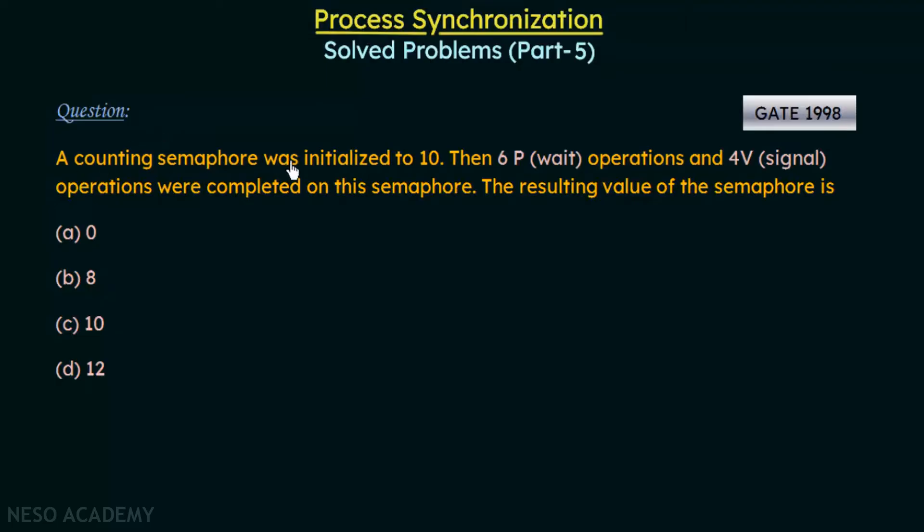It says a counting semaphore was initialized to 10. Then 6P, that is wait operations, and 4V, that is signal operations, were completed on this semaphore. The resulting value of the semaphore is what? We have four options: A) 0, B) 8, C) 10, and D) 12.